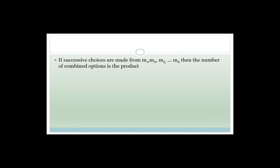Now let's talk about the fundamental counting principle. This is part of probability and is new work for grade 12. If successive choices are made from M1, M2, M3 to MN, then the number of combined options is M1 × M2 × M3 × ... × MN. This is very theoretical, so I'll explain it with an example.